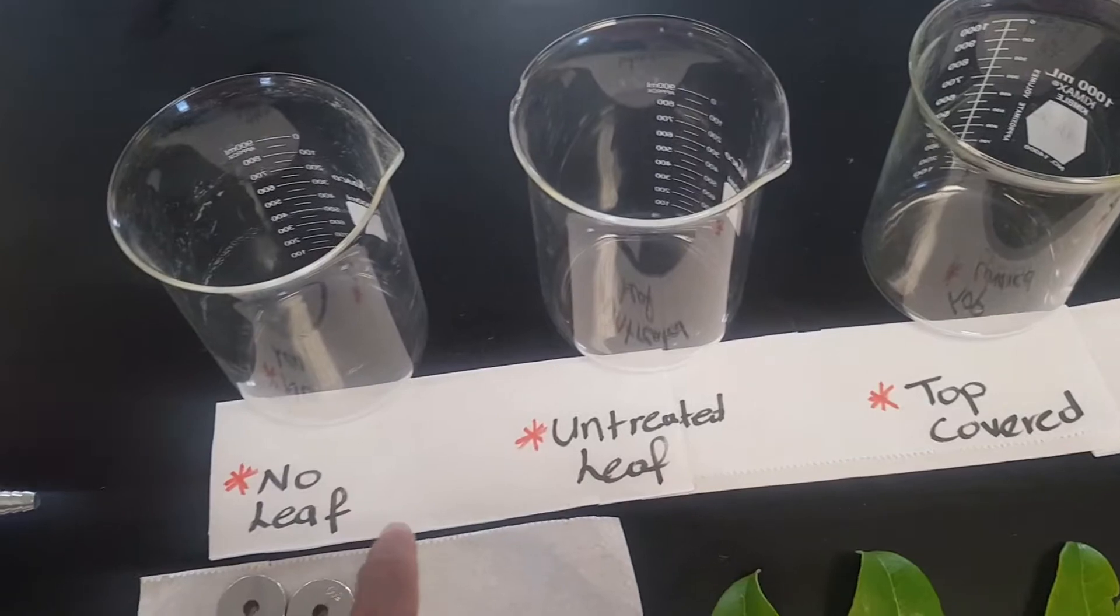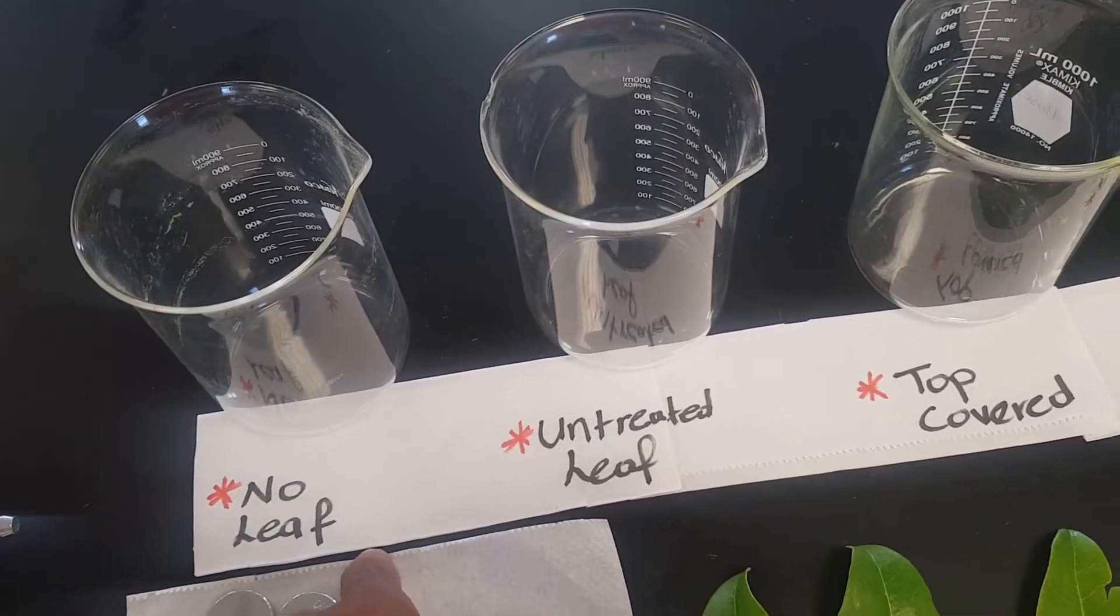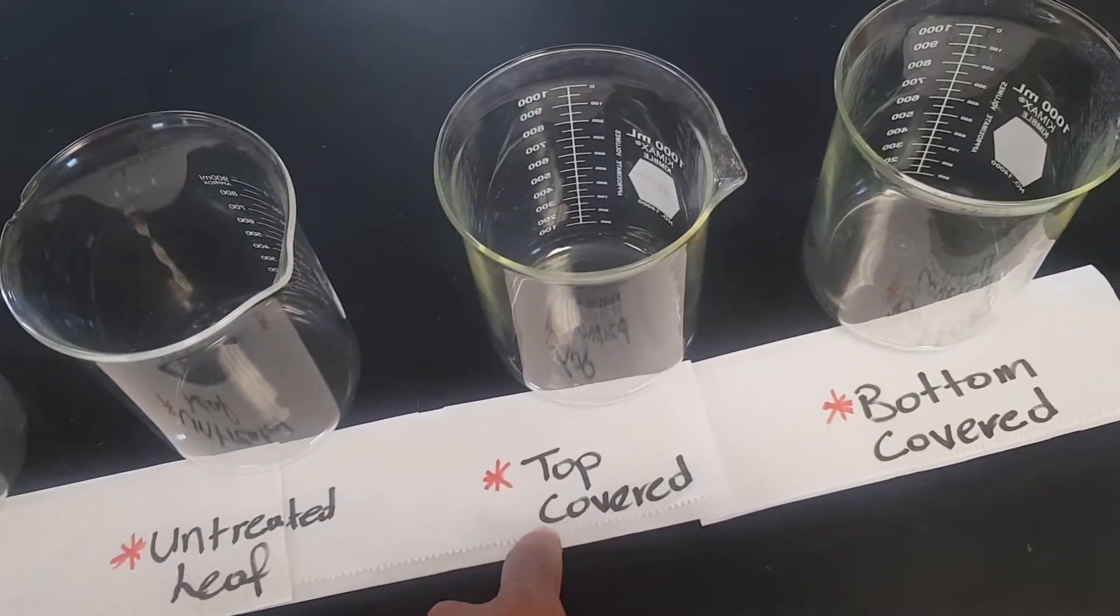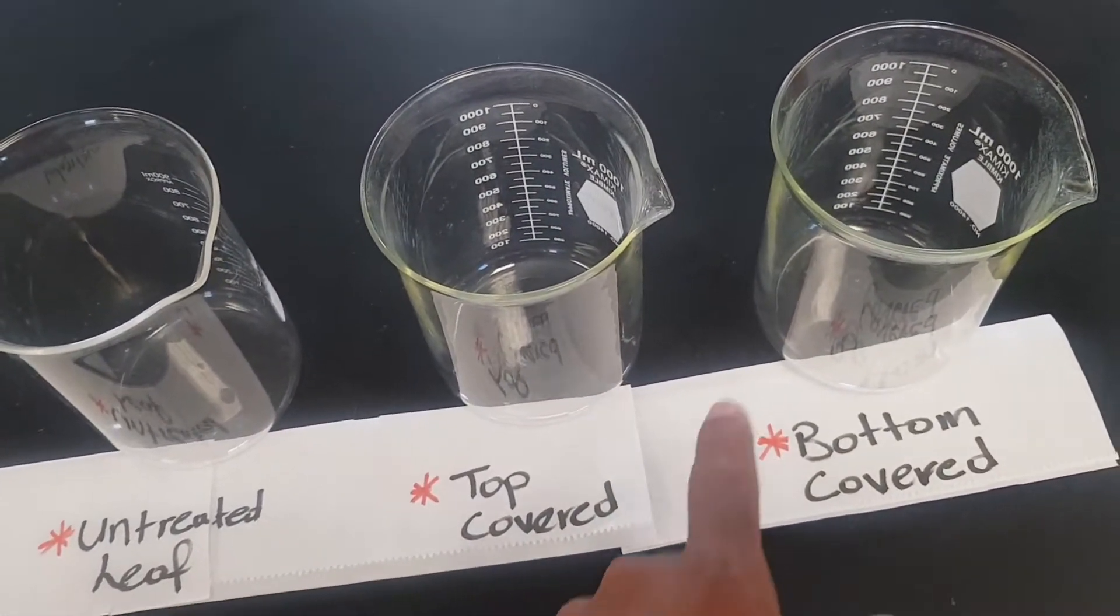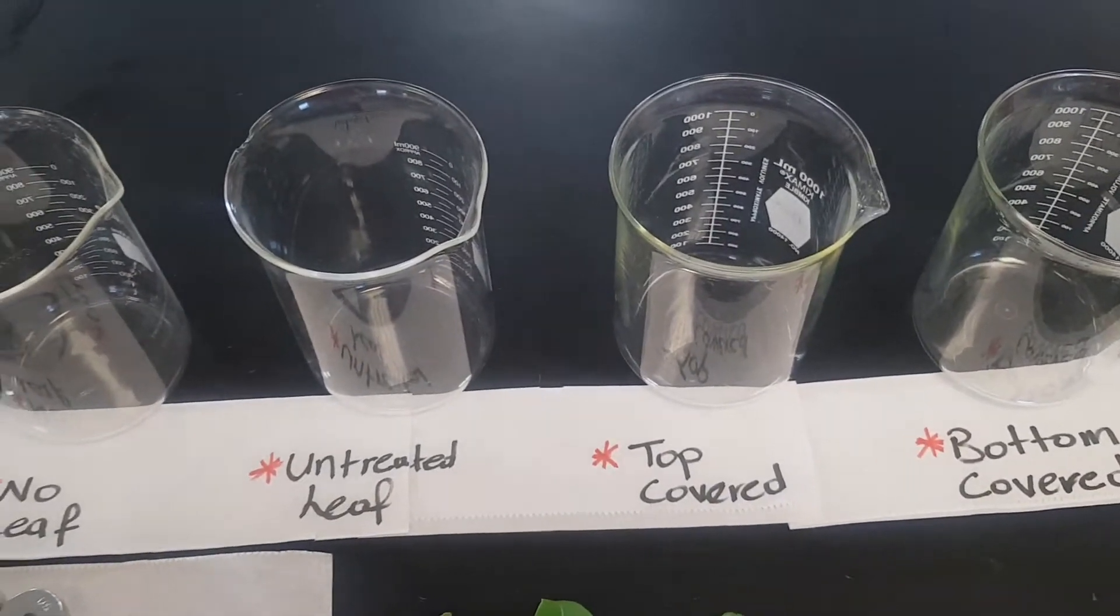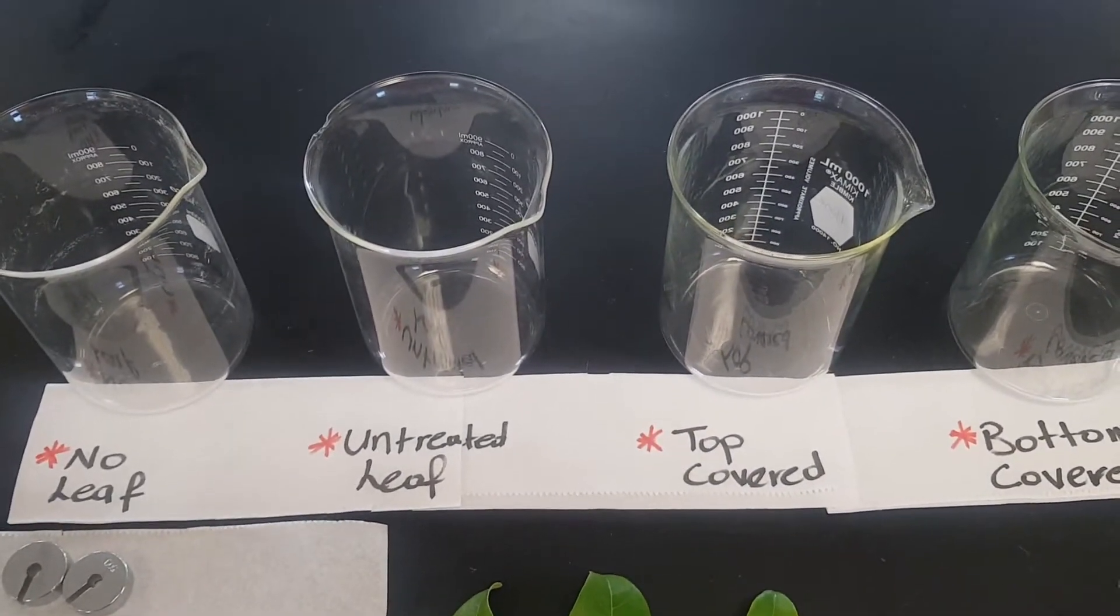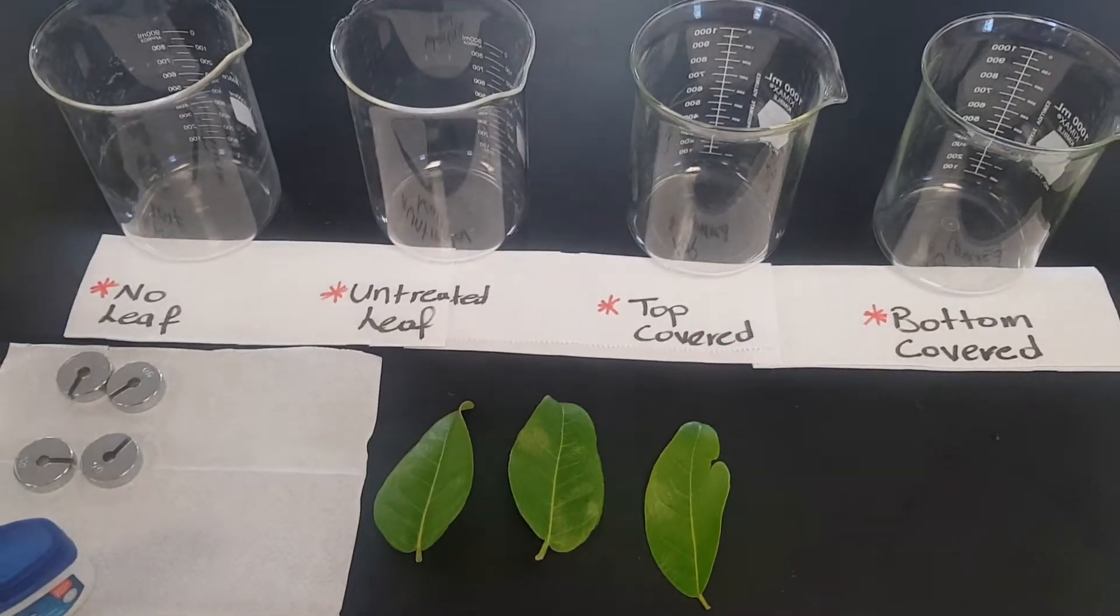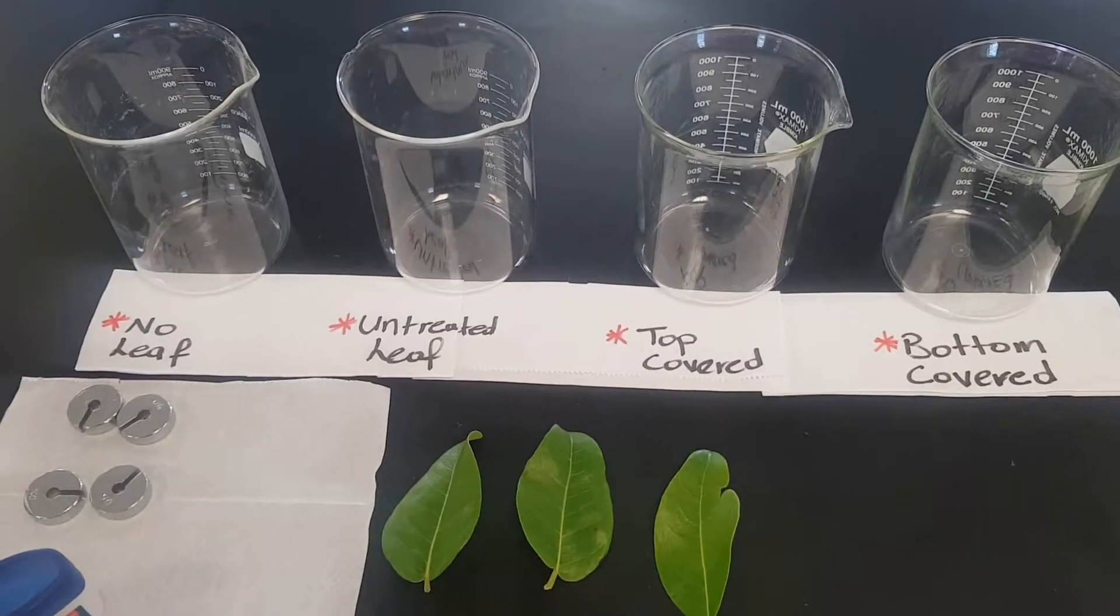The leaves will be treated in terms of: no leaf in this beaker, untreated leaf, the top will be covered, and the bottom will be covered. We'll determine which side of the leaf will produce the greatest amount of gas, and that will indicate which side of the leaf has the greatest number of stomata.